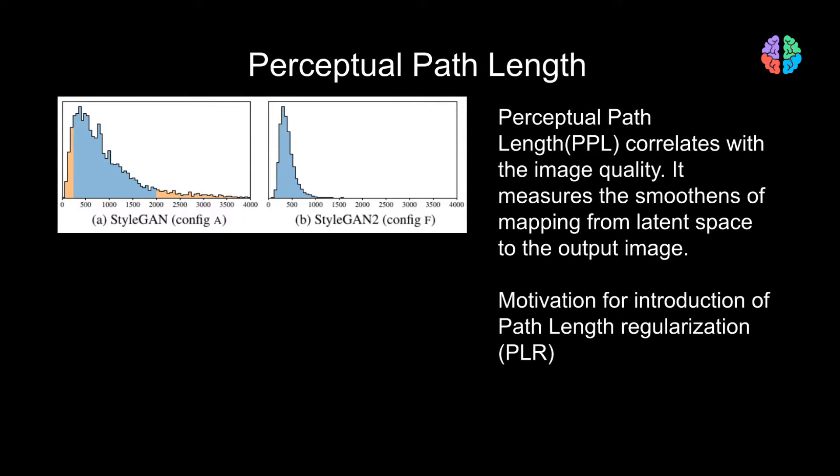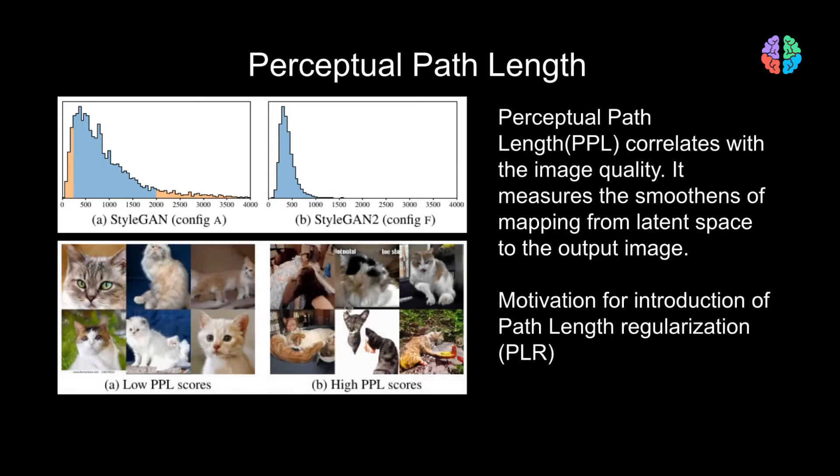Perceptual path length was the metric introduced in StyleGAN. In StyleGAN2, they study the correlation between PPL and image quality. They show that the PPL directly correlates with the smoothness of the generated images. In this figure, you can clearly see that the images with low PPL scores make much more sense compared to images with high PPL scores.